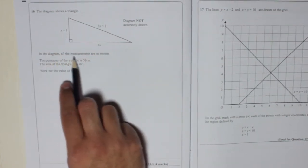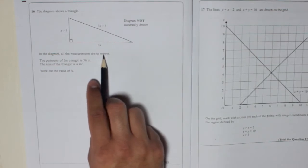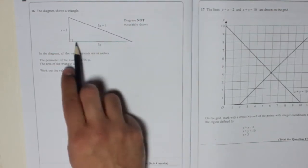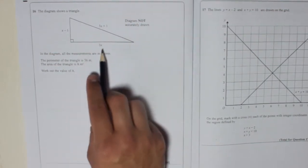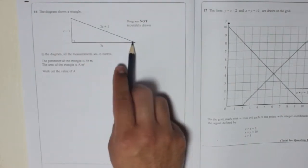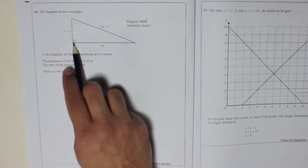In the diagram all the measurements are in metres. So that means that's 3x metres long, and that one's 3x plus 1 metres long, and this one is x minus 1 metres long.